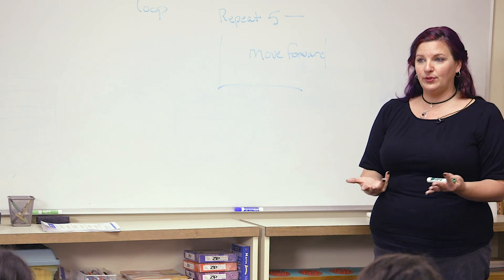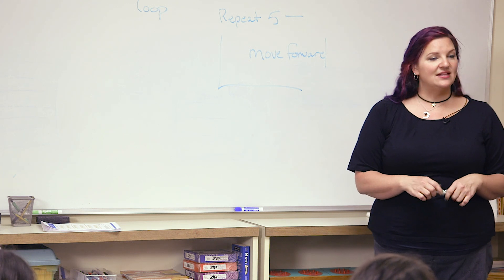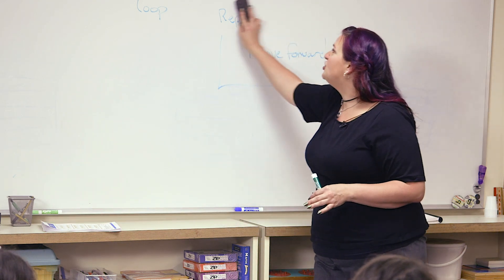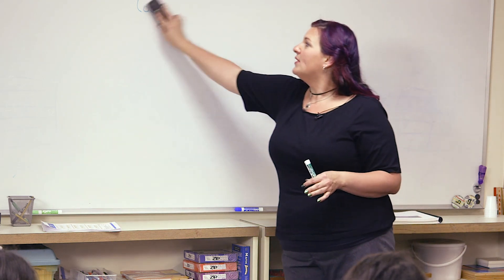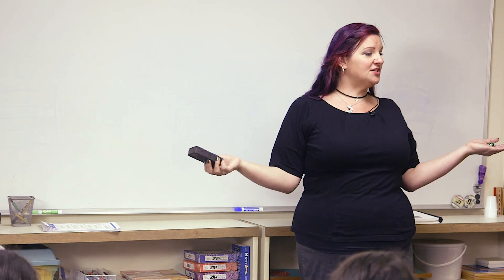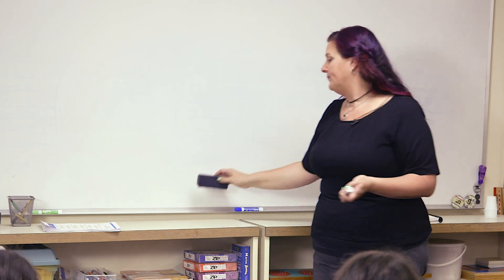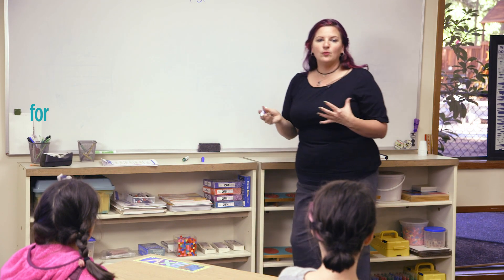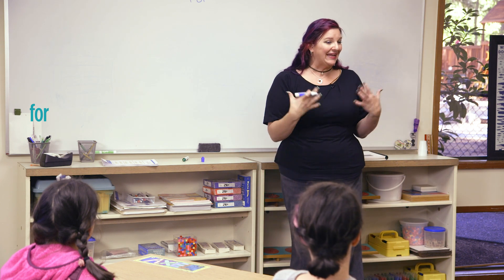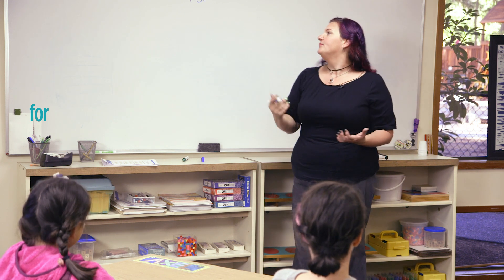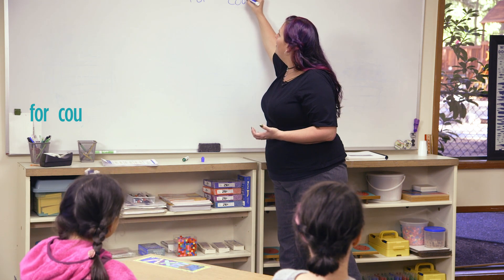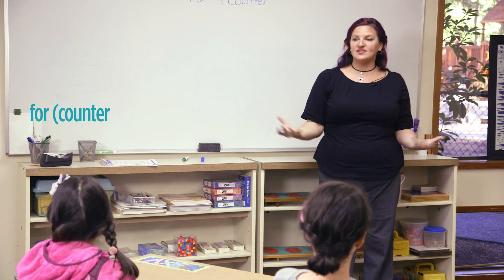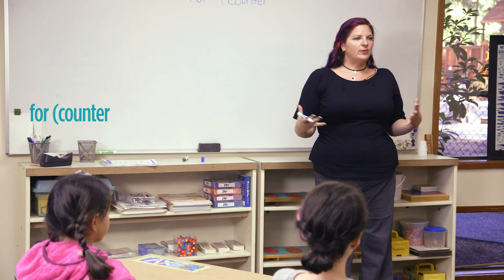There's a more powerful loop out there that we're going to learn about today, and it's called the for loop. With a for loop, we get to choose where it starts — maybe we want it to start at zero, maybe we want it to start at three. So we have a for loop, and then we have a variable or a counter of some kind, and we get to say where it starts.